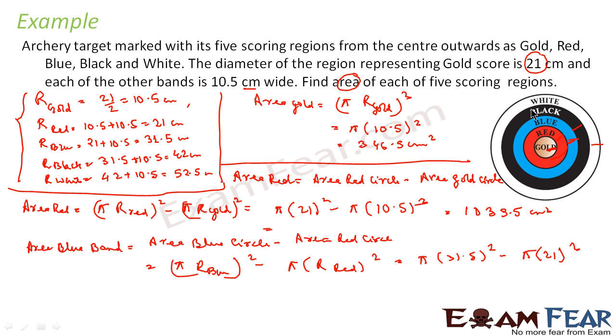Similarly, for the black, same thing, area of black band will be, area of black circle minus area of blue circle. You get the answer. Area of white band will be, area of white circle minus area of black circle. You do this and you get the answer.